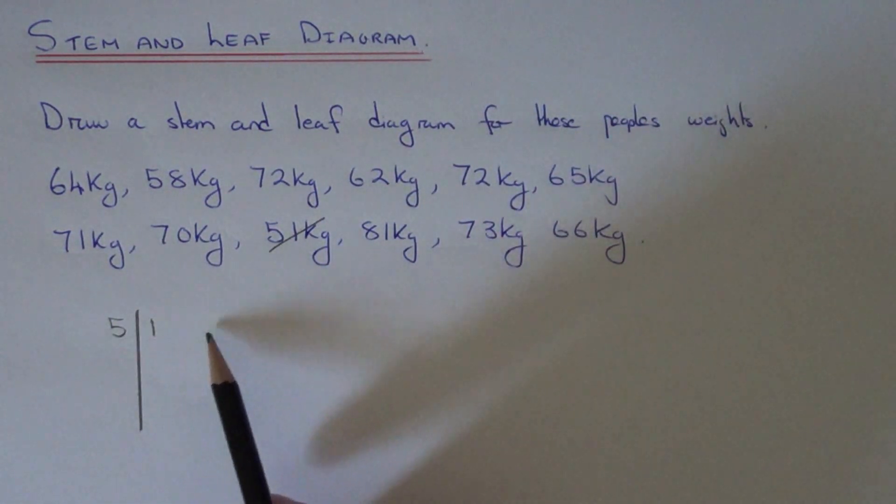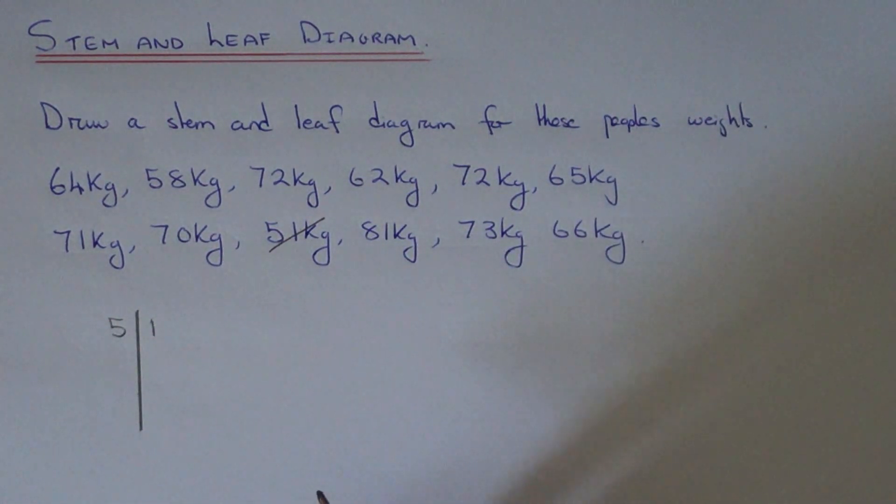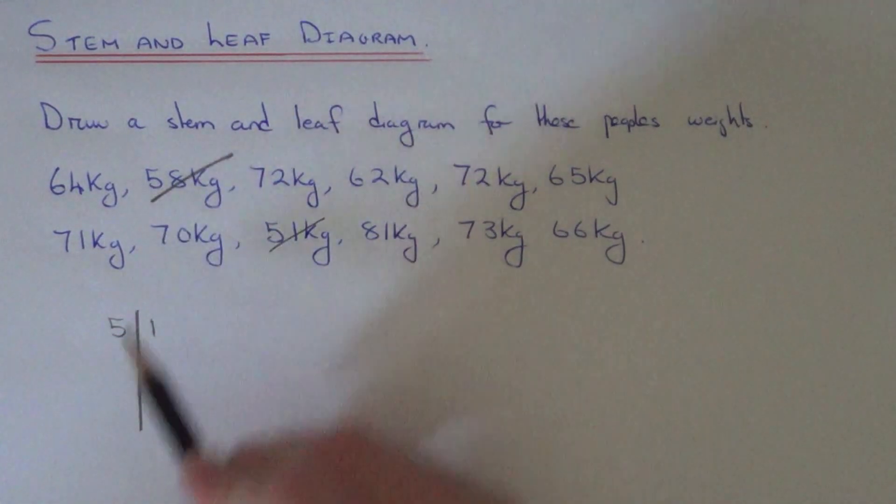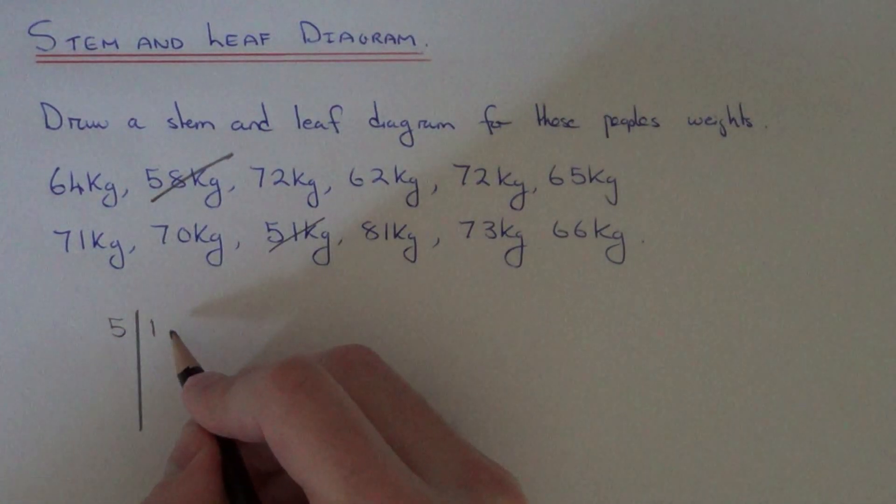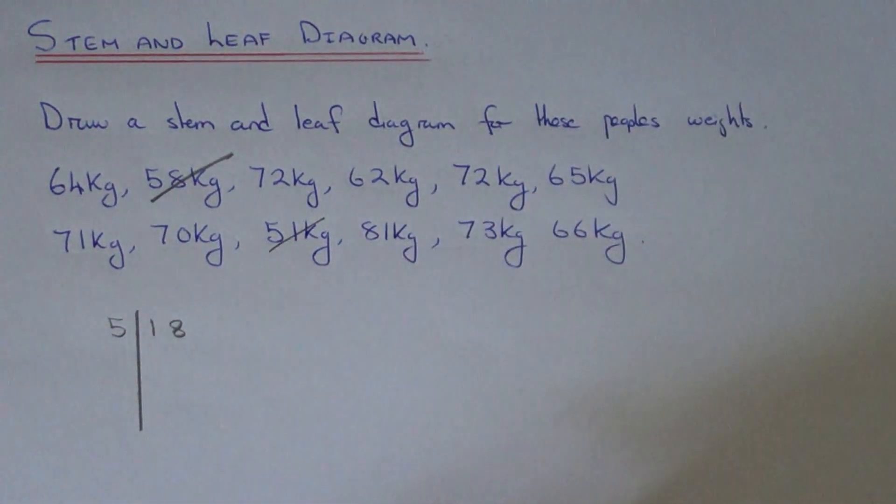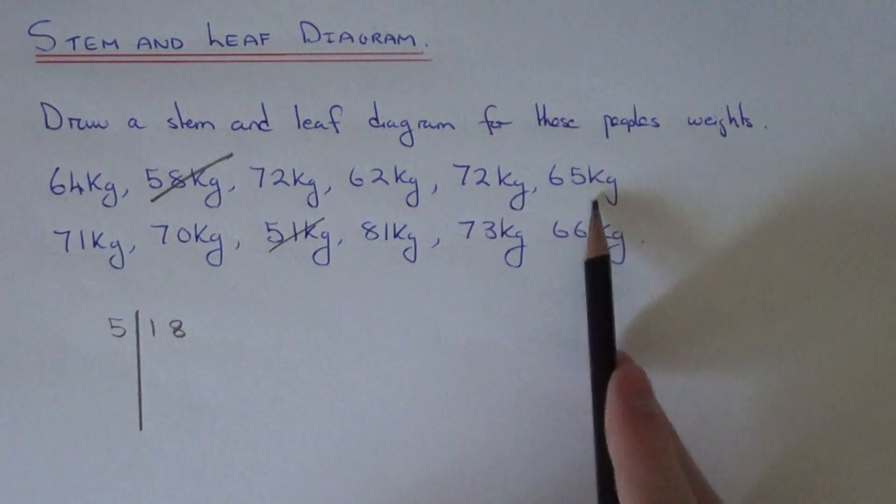Basically, this first row is going to be acting as all the numbers in the 50s. So our next weight is 58. All we need to do is drop the 8 on the right hand side there, so that would be 58. I think we've done our numbers in the 50s.